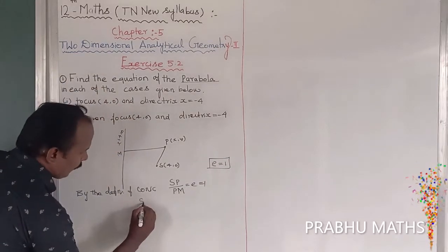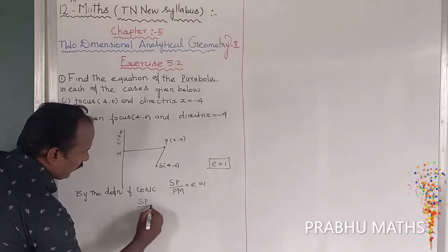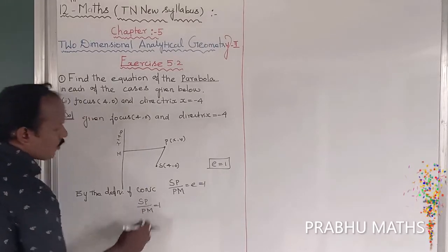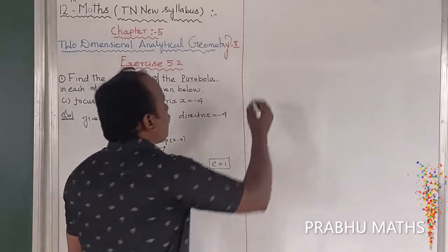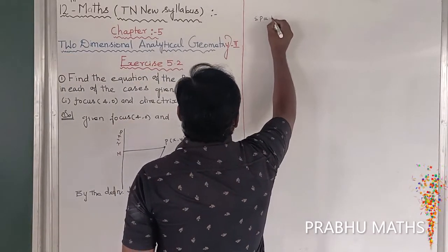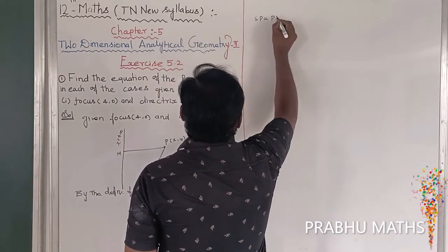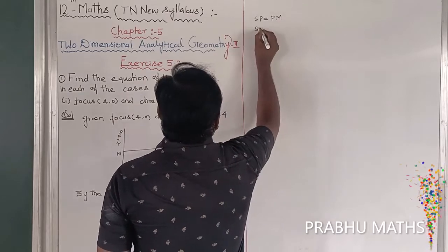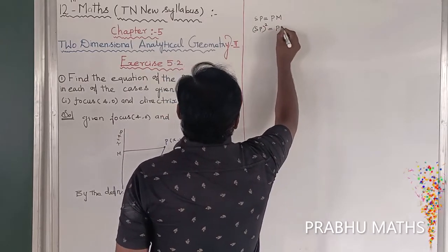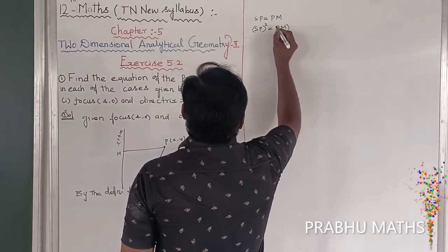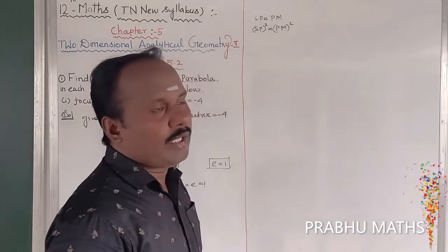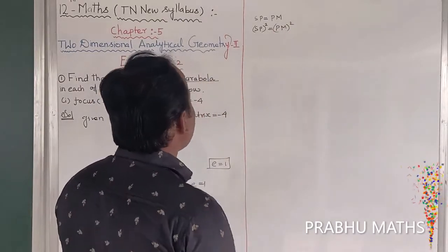So SP divided by PM equals 1. By cross multiplication, SP is equal to PM. Squaring both sides, SP squared is equal to PM squared.